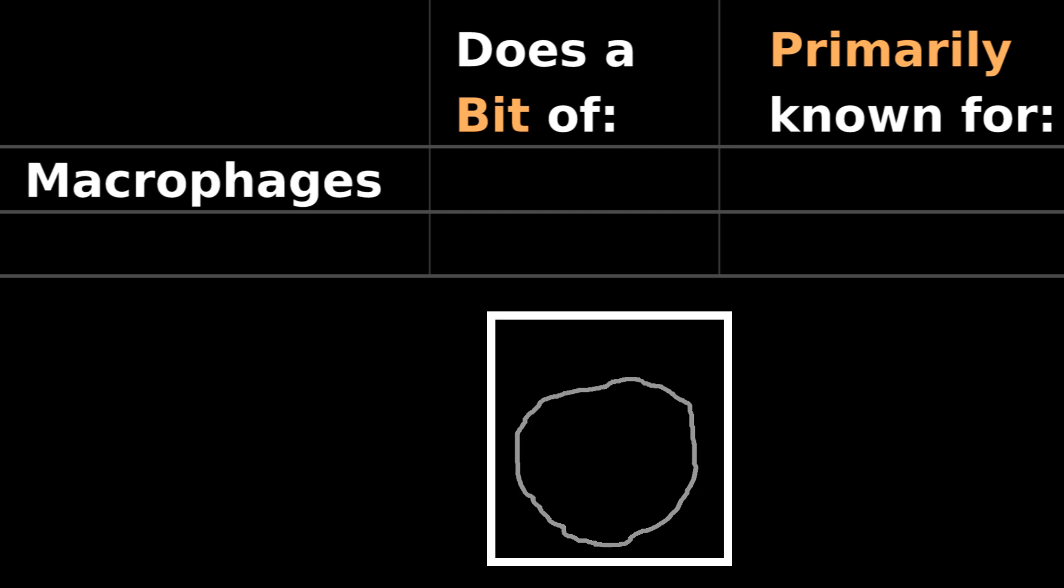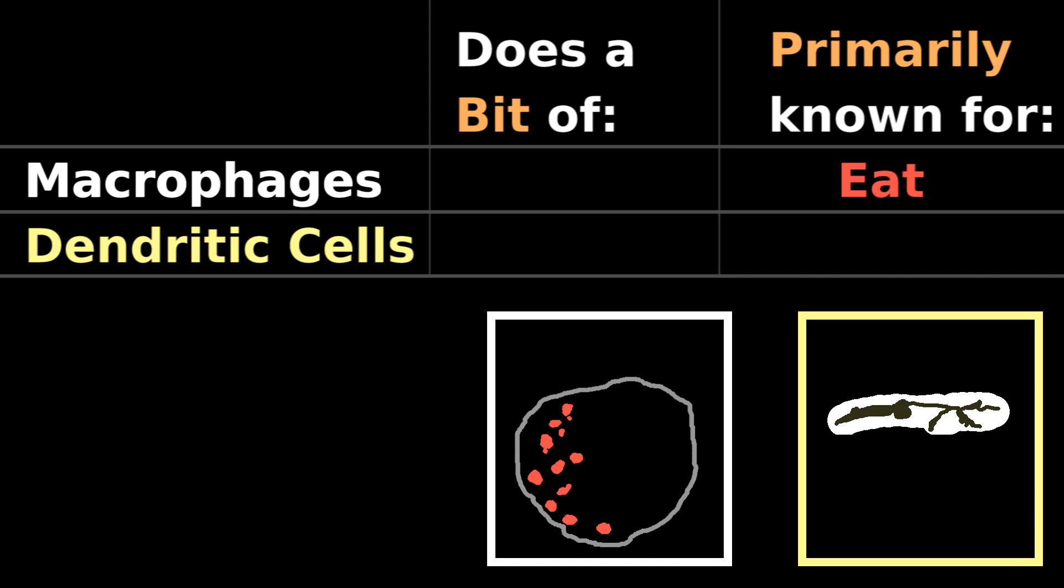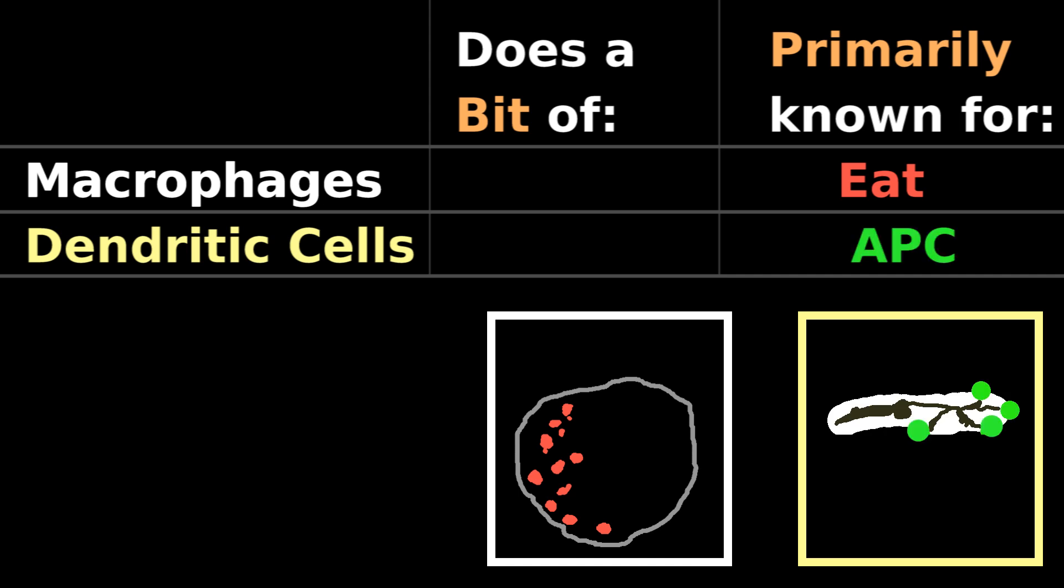It's as if macrophages have a bigger belly, so they are better at eating. And dendritic cells have more branches to hang antigen on, so they are better at antigen-presenting.